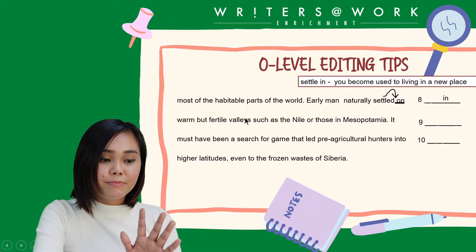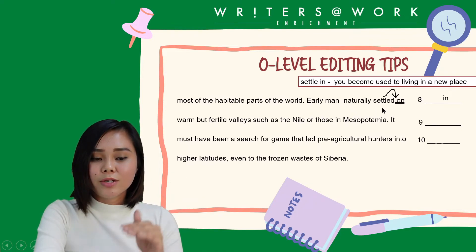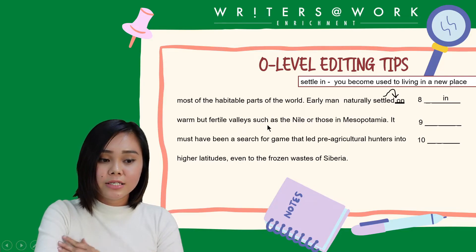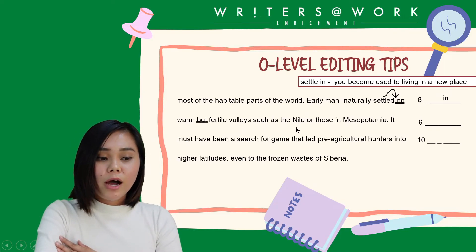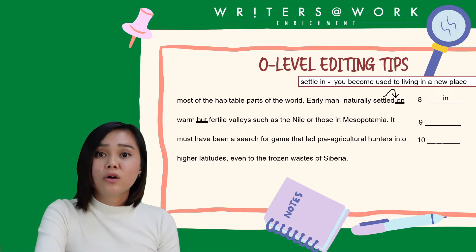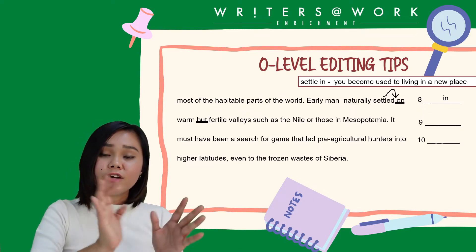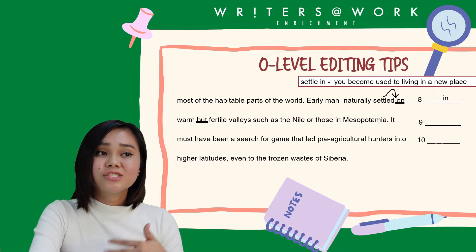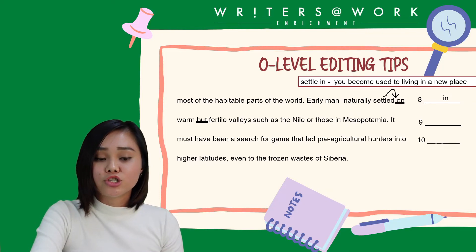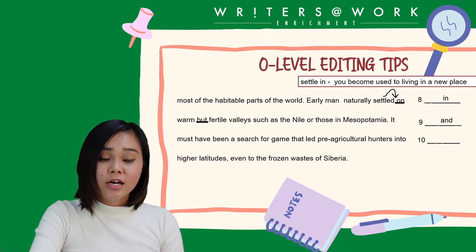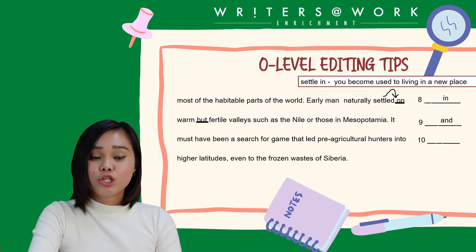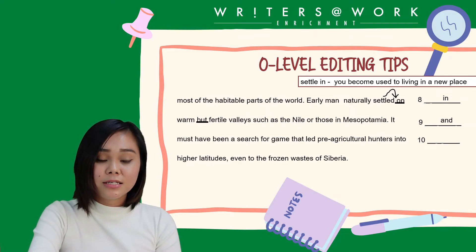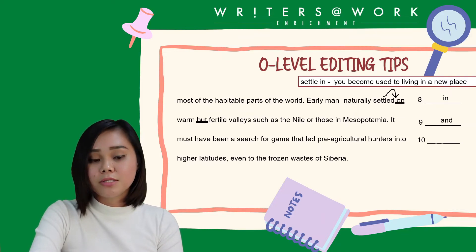For number nine, naturally settled in warm but fertile valleys such as the Nile — why are we using 'but' when there is no contrast? The two phrases being combined are not contrasting each other; you're just adding additional information. The correct conjunction should be 'and': early man naturally settled in warm and fertile valleys such as the Nile or those in Mesopotamia.